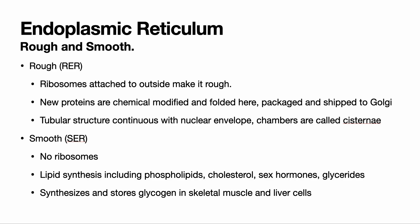We have two kinds of endoplasmic reticulum. The rough endoplasmic reticulum has ribosomes attached to it, making it look rough on the outside. This is where new proteins are chemically modified and folded into their final shape — the shape of a protein is really important. From the rough ER, new proteins most likely travel to the Golgi via a vesicle. The rough ER is continuous with the nuclear envelope, and its tubular structures are called cisternae.